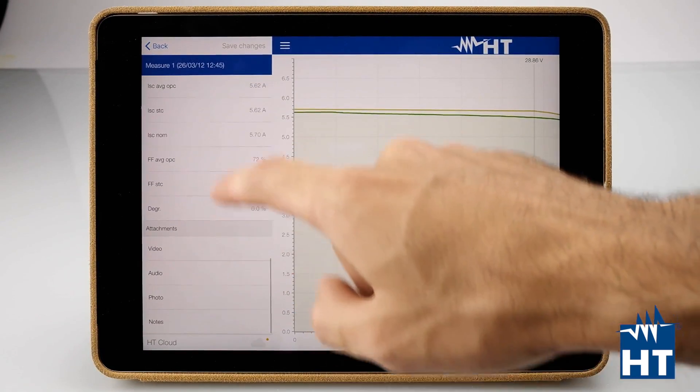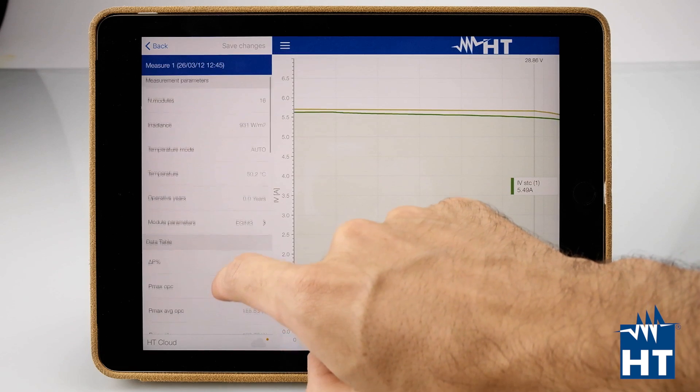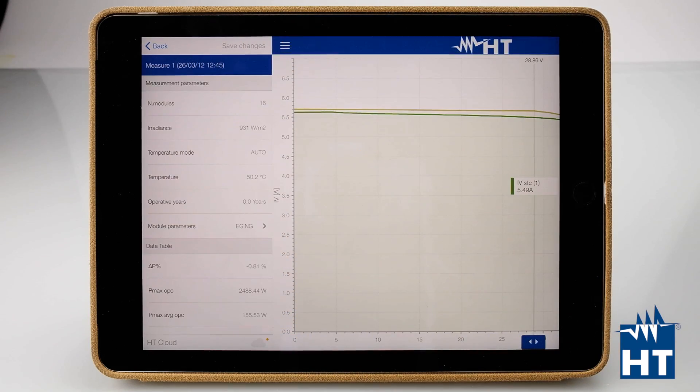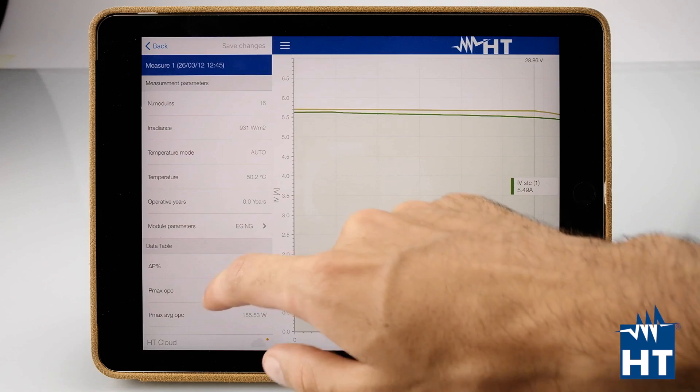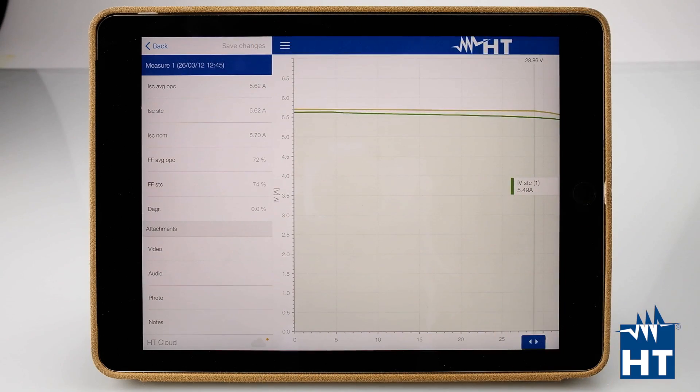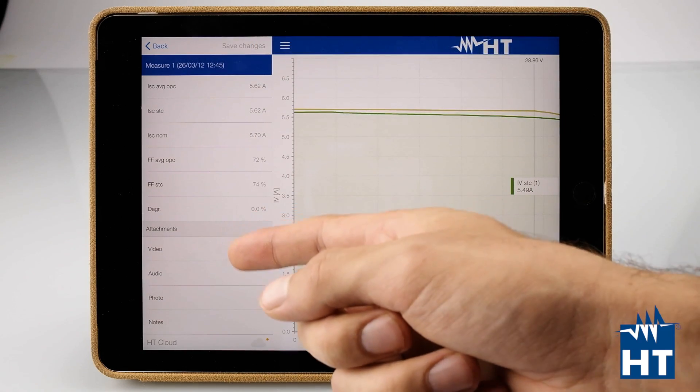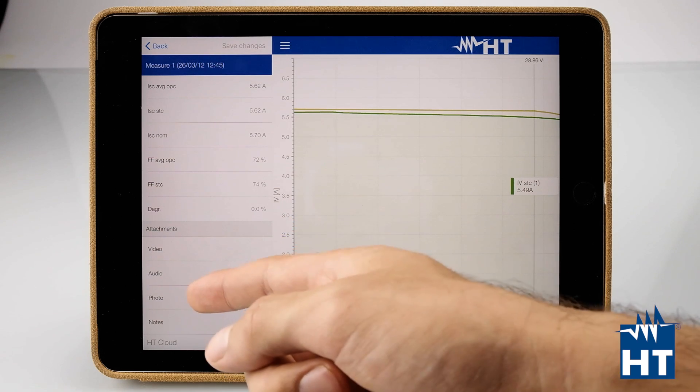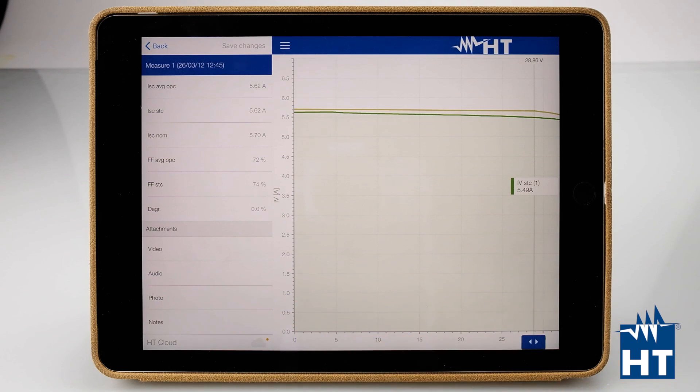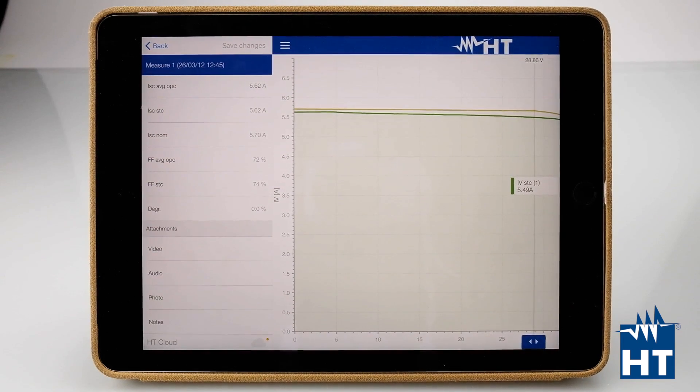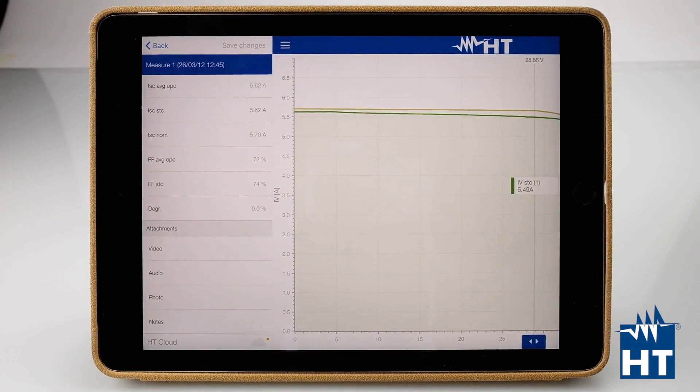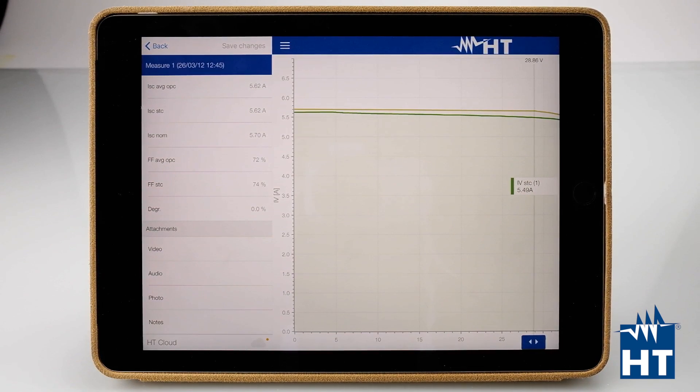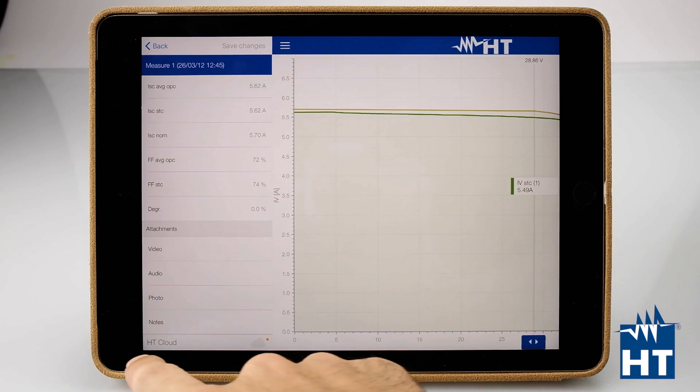One of the most important parts of the app is that you can attach a video, record a vocal comment, attach a photo, or write a text note. Each text note, each video, each audio recorded, each photo is available on your PC. After you've uploaded everything on HT Cloud, you can find a button here.